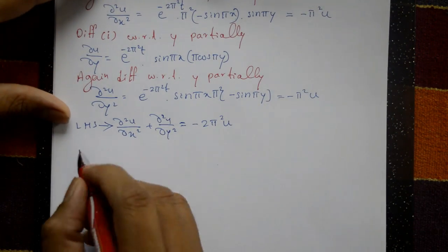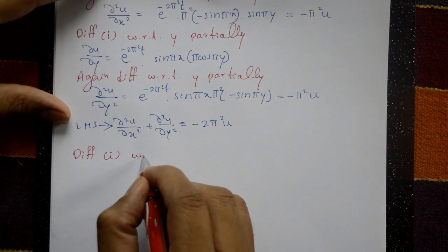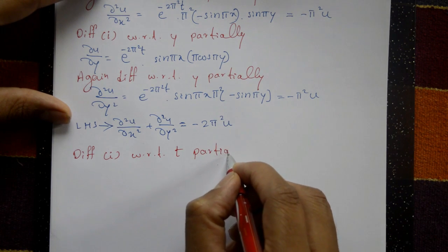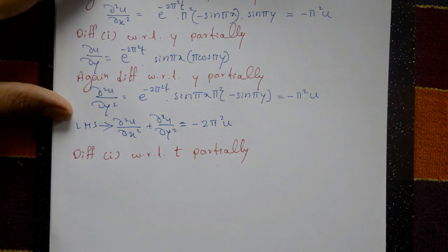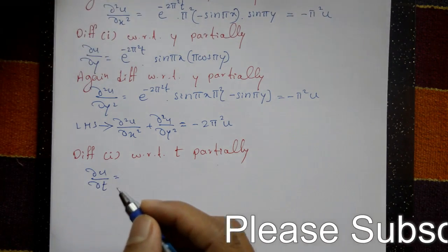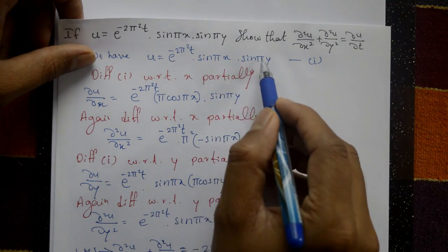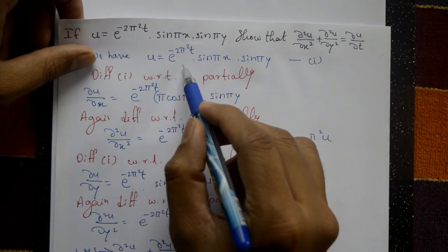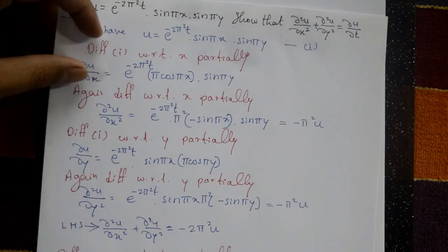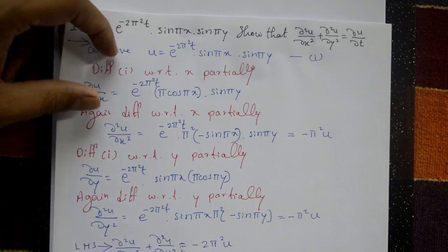Now for the right-hand side, differentiate equation number 1 with respect to t partially. x and y are treated as constants. ∂u/∂t: sin(πx)·sin(πy) is constant. Differentiate e^(-2π²t) to get e^(-2π²t) multiplied by minus 2π².